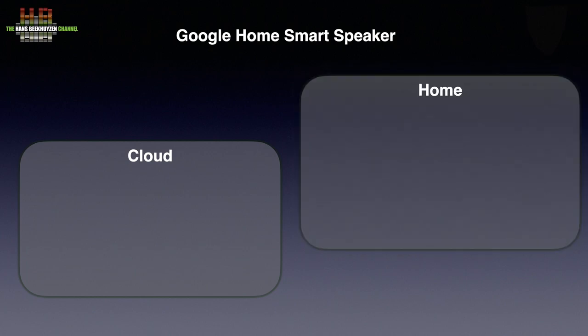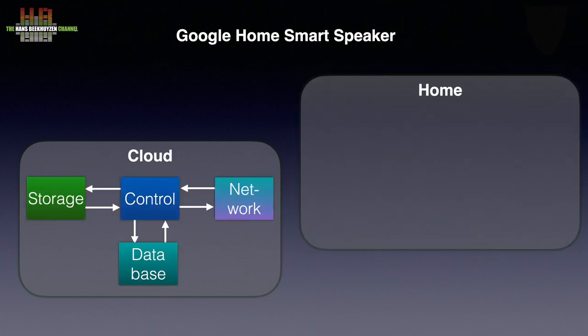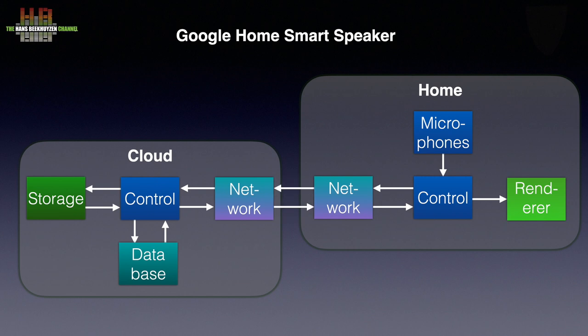What's the topology of such a system? There are two environments: the cloud and home. The cloud does the control, the storage and the database, and connects to the home environment over the network interface using the internet. At home there again is a network interface talking to control. Control listens to the internal microphones all the time to pick up the attention call 'Hey Google' and listens to the request. It sends that audio over the network to control in the cloud, where the instruction is interpreted and the response is returned to home — that can be a remark, a question or a result like playing music.